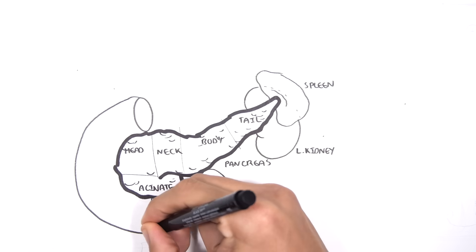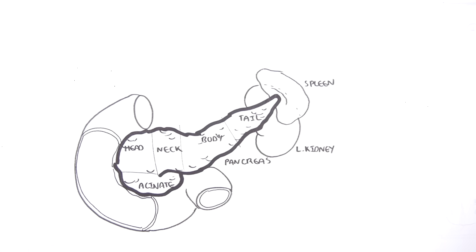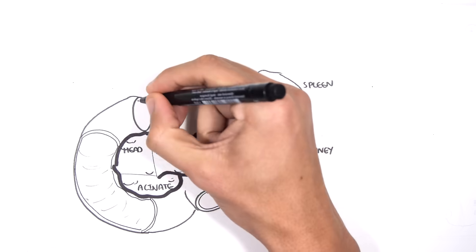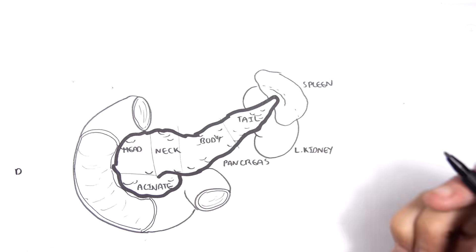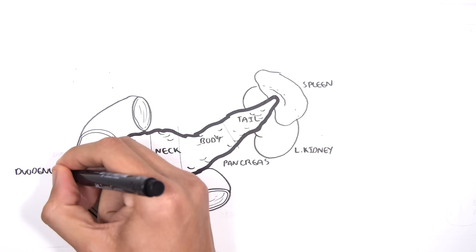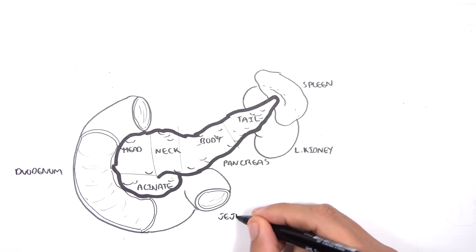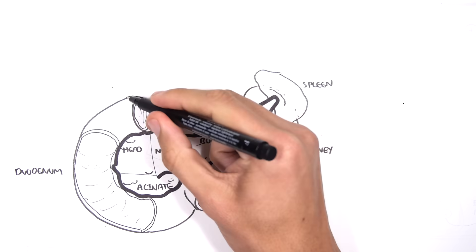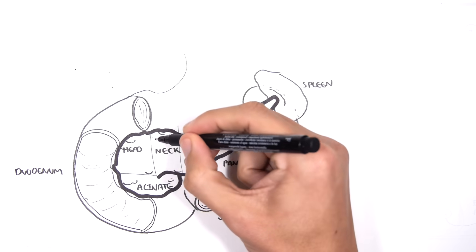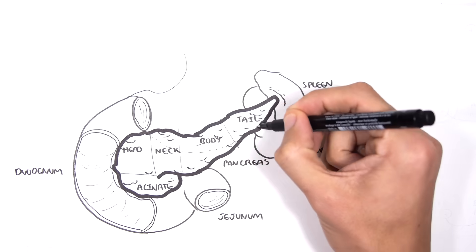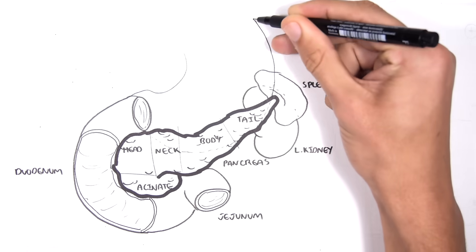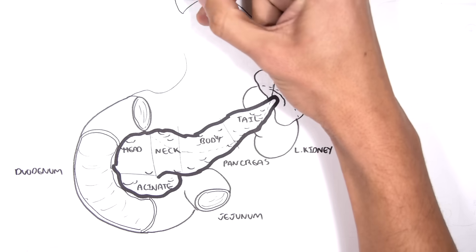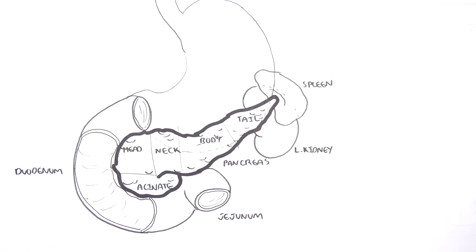The head and uncinate process of the pancreas interact with the first part of the small intestine called the duodenum. The beginning of the second part of the small intestine, the jejunum, also interacts with the inferior surface of the pancreas.